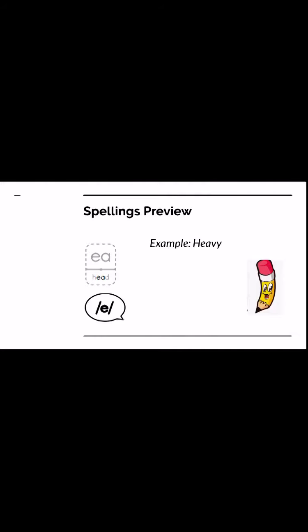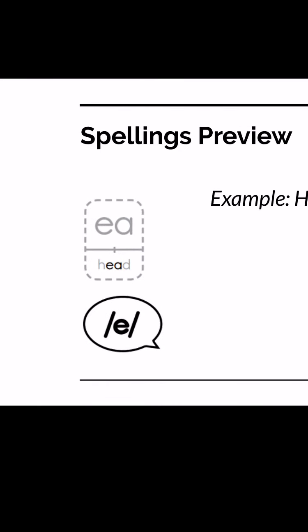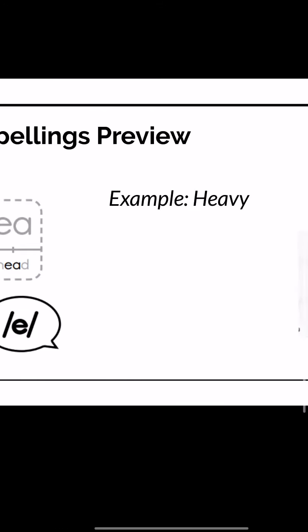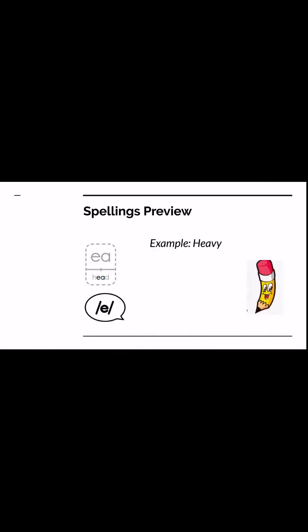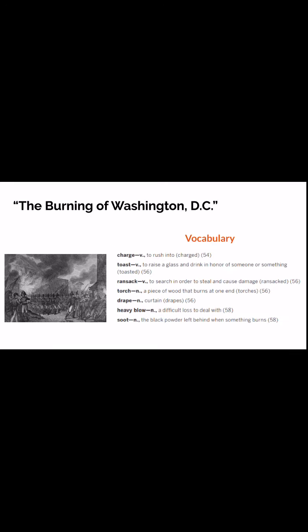Let's take a look at our spellings preview. We have E-A on our card making the short E sound. Like in the word 'head,' you hear E-A making that short E sound. Sometimes it can make the long E sound, but in this case it's making the short E sound. For example, 'heavy.'